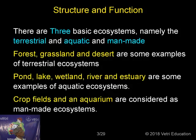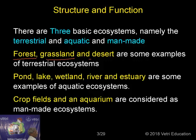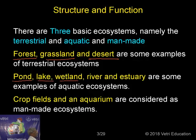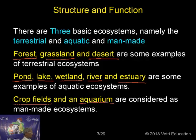There are three basic ecosystems: terrestrial ecosystem, aquatic ecosystem, and man-made ecosystem. Forest, grassland, and deserts are examples of terrestrial ecosystems. Pond, lake, wetland, river, and estuary are examples of aquatic ecosystems. Crop fields and aquarium are man-made ecosystems.